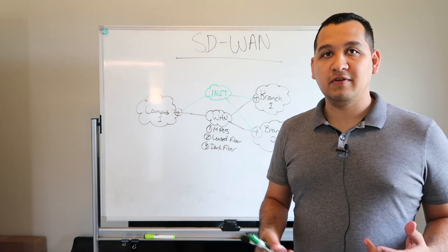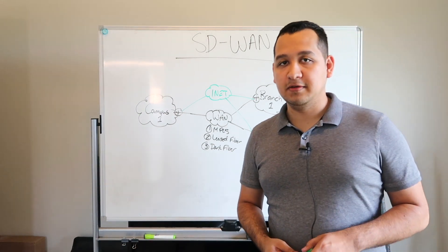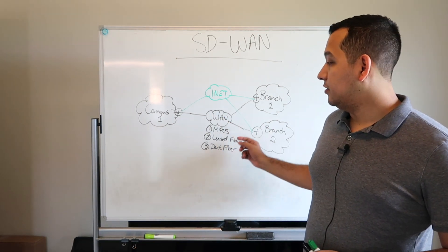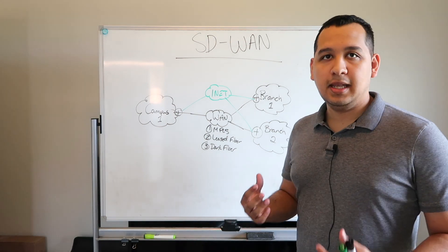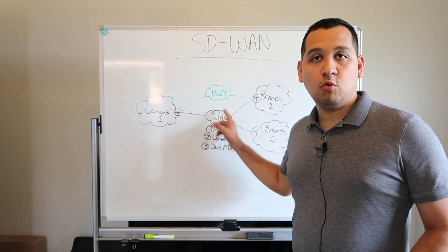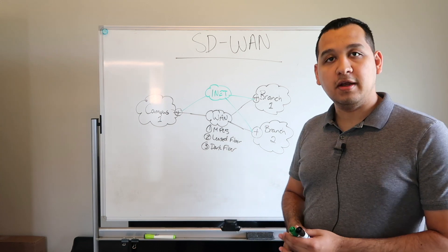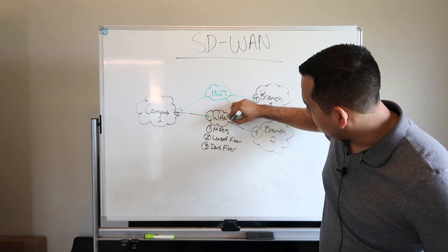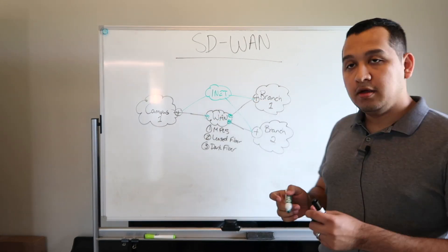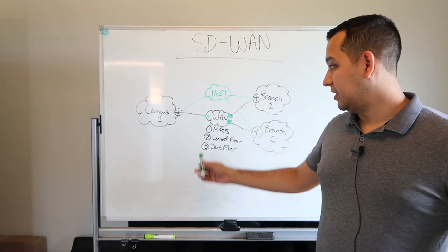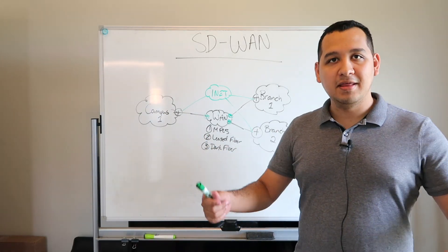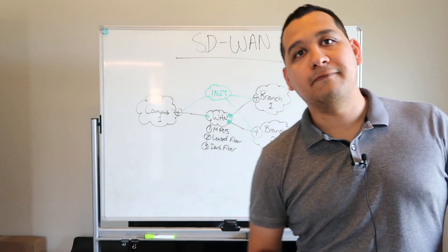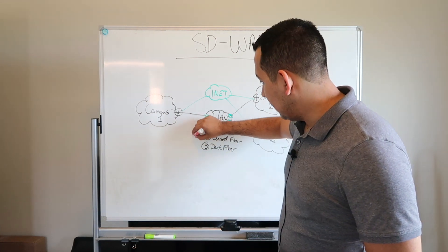And lastly we have dark fiber, which is the most expensive. We call this dark fiber because with MPLS and leased fiber, you do not have to provide the equipment to light up the fiber for the wide area network. In the dark fiber scenario, you actually have to provide the routers and optics that run the wide area network yourself. You also have to dig the trenches, or pay somebody to dig them, or buy them from somebody else. This gives you the first big downside to wide area networks: it's very expensive.